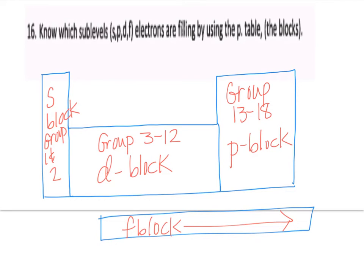Question 16 just says know the sublevels and where the electrons are being filled. And we did that back during the last unit. The S block is groups 1 and 2. The P block is groups 13 through 18 over here. The D block is the middle transition metals. And the F blocks are the lanthanide and actinide series at the bottom.